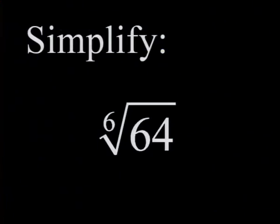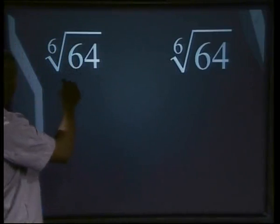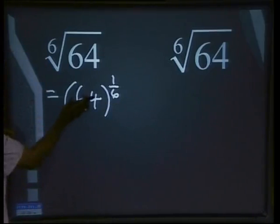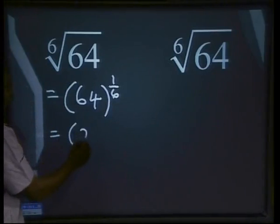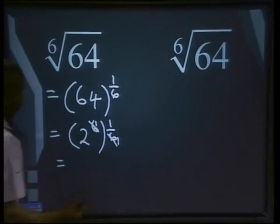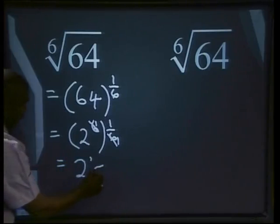Let's go back to Dumsani as he looks at more complex questions. Let's try and simplify the 6th root of 64. There are two ways to simplify this. First, we are going to write it as a power with a fractional exponent. The little 6 is the denominator of the fractional exponent — it is always easier to write a root as a fractional exponent. So we write the 6th root of 64 as 64 to the power of 1 over 6. Simplify 64: 64 is the same as 2 to the power of 6, all to the power of 1 over 6. The 6 and the 6 cancel out, so we have 2 to the power of 1, which is 2.